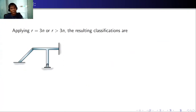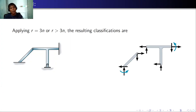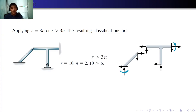For the third pin-connected structure: separating gives n equals 2, and counting forces gives r equals 10. Applying the equation, r is greater than 3n (which is 6), so this is statically indeterminate. The degree is 10 minus 6 equals 4, so statically indeterminate to the fourth degree.